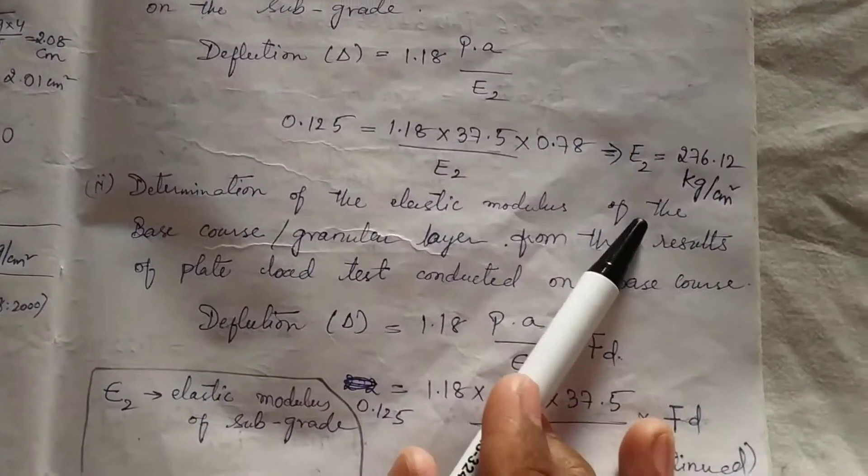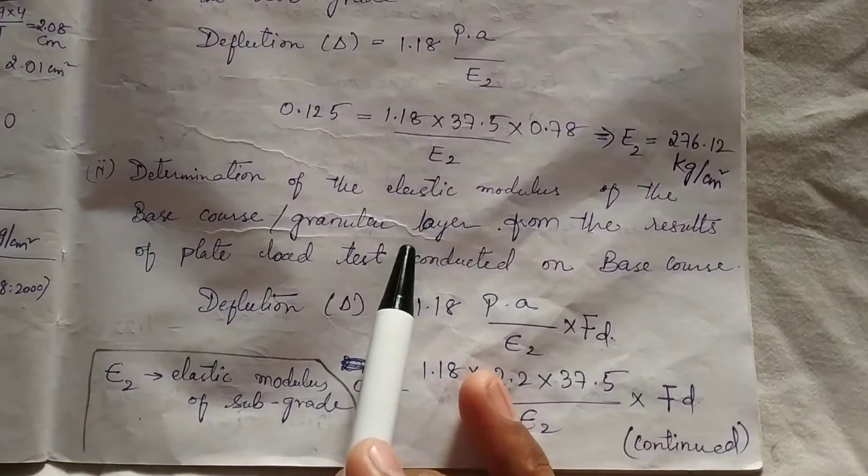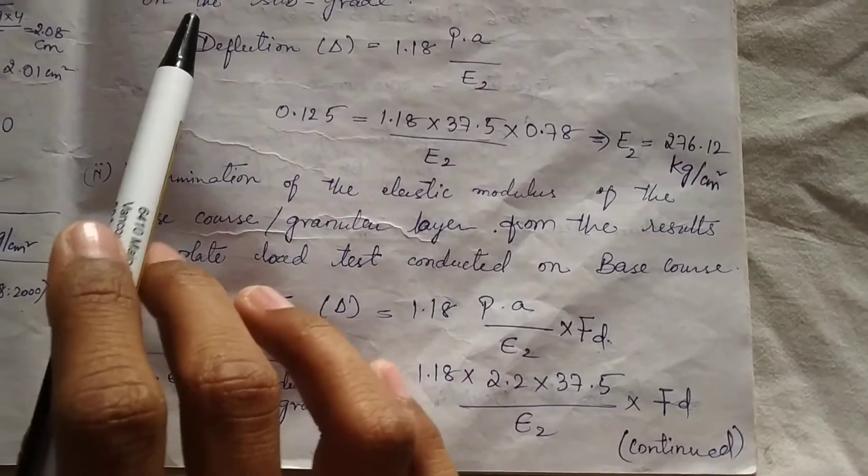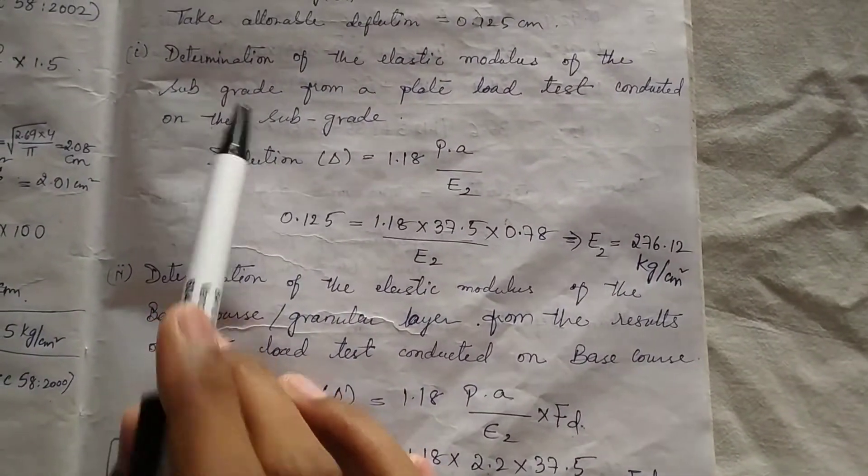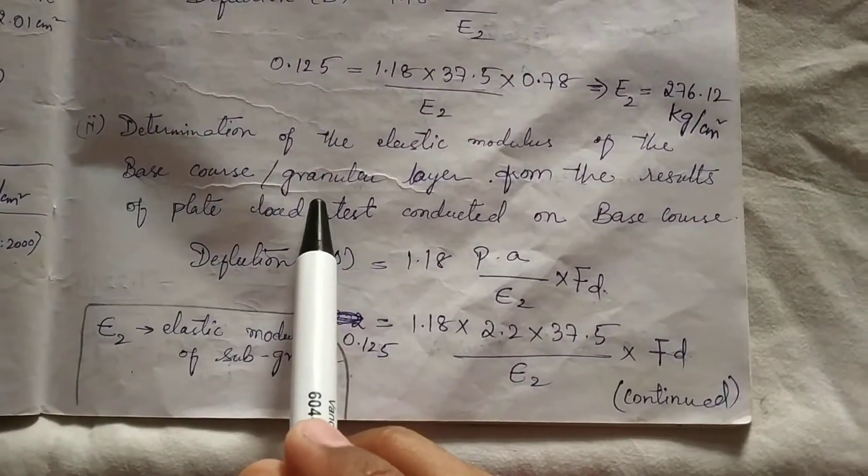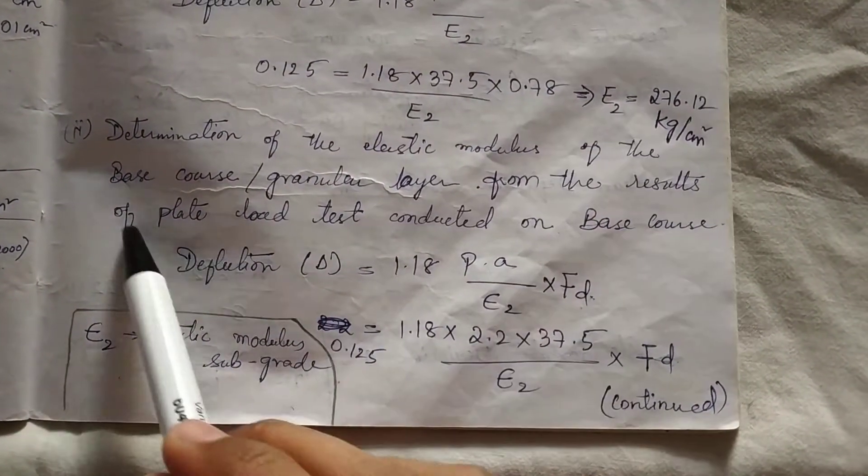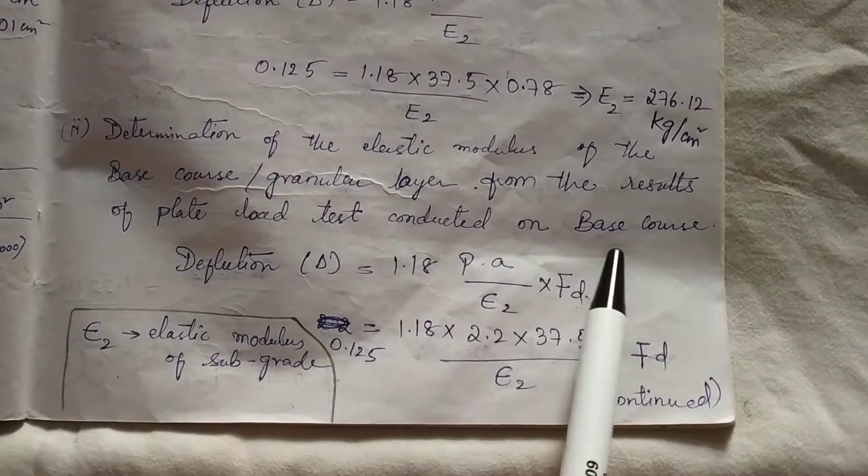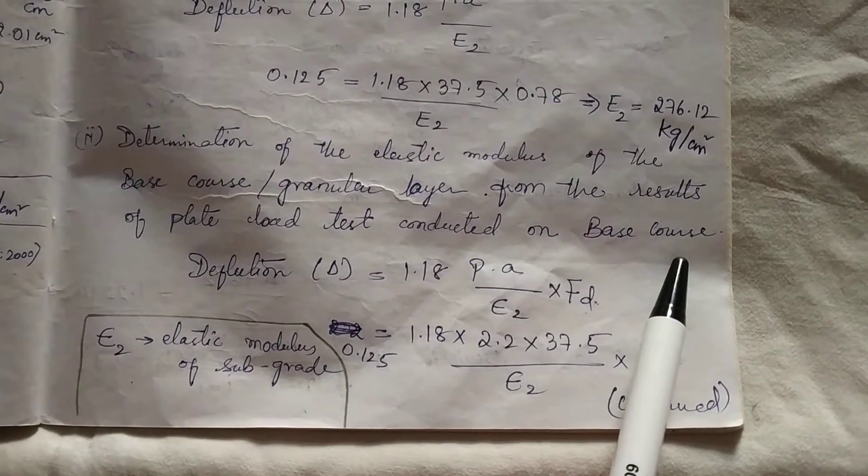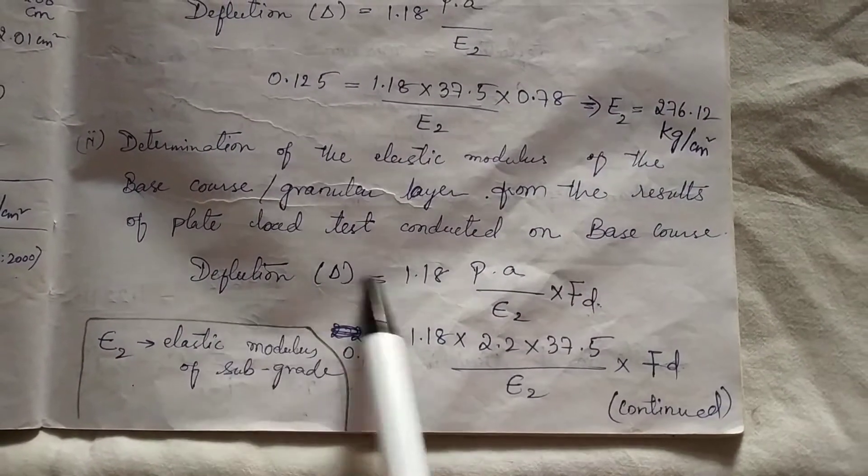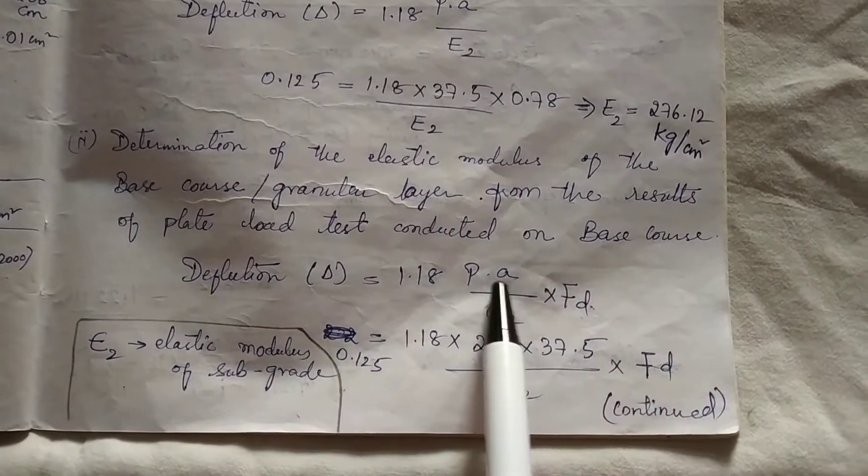Second step is determination of the elastic modulus of the base course or granular layer. As we have found for the subgrade, now we will calculate for base course or granular layer from the results of the plate load test conducted on the base course.